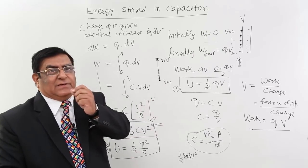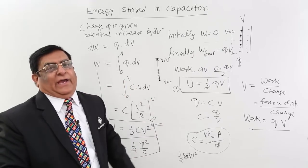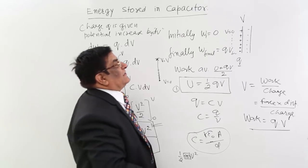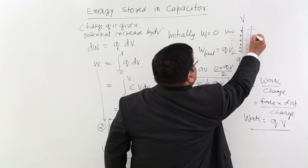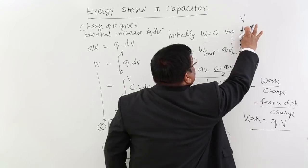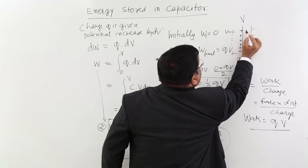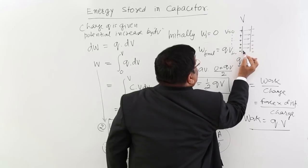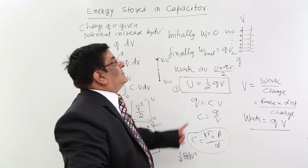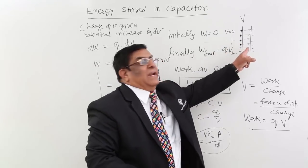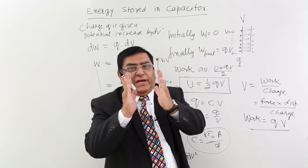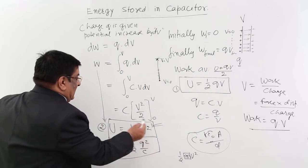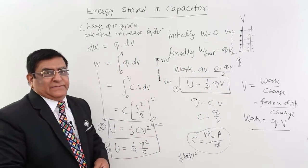Sometimes it is asked, where does this energy lie? So remember, this energy lies in the electric field between the two plates. This is electric field and the energy lies in this location. If there is a dielectric here, then we will say energy lies in the dielectric. So energy lies in the electric field or in the dielectric and this is the energy in a capacitor.